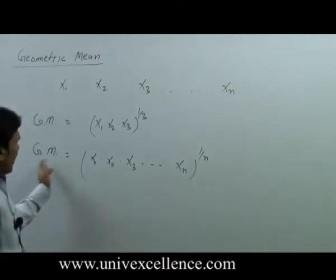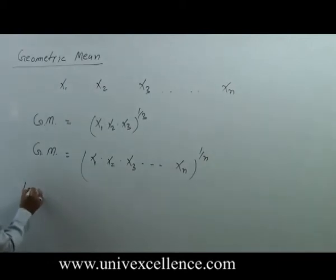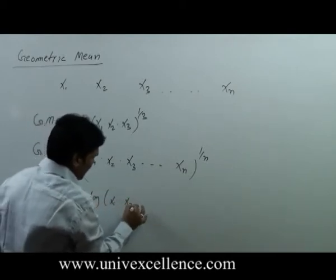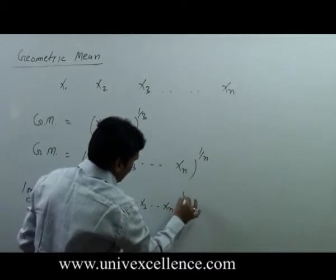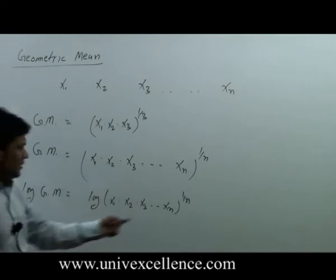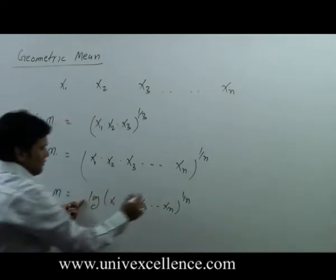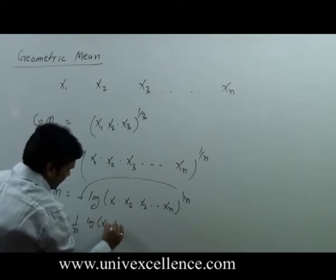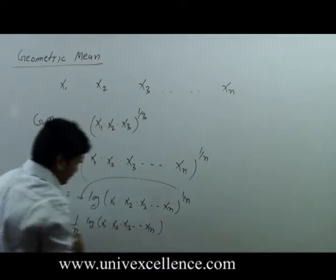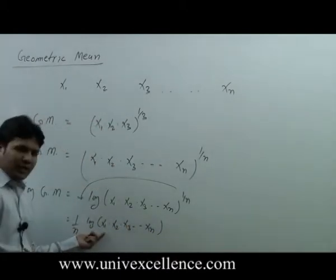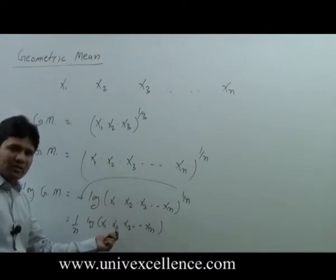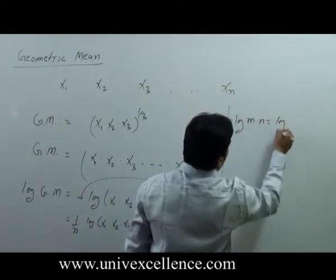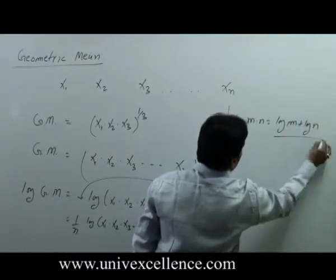Now if we take the logarithm of geometric mean on both sides, we will see that log of geometric mean equals log of x1 multiplied by x2 multiplied by x3 up to xn, to the power 1 upon n. We know that when we take the logarithm, the power comes out as a multiplier. As we know, the log property states that log of a product equals the sum of the individual logs.